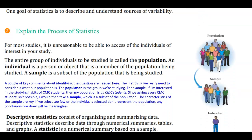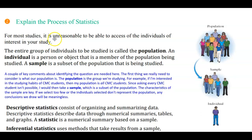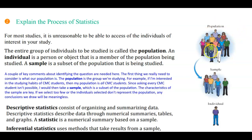Explaining the process of statistics: for most studies, it is unreasonable to be able to access all of the individuals of interest in your study. The entire group of individuals to be studied is called the population. An individual is a person or object that is a member of the population being studied, and a sample is a subset of the population that is being studied.